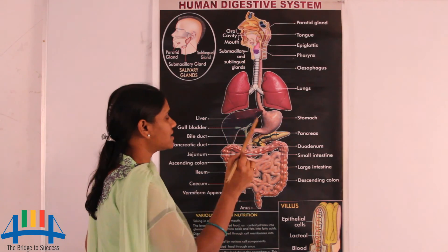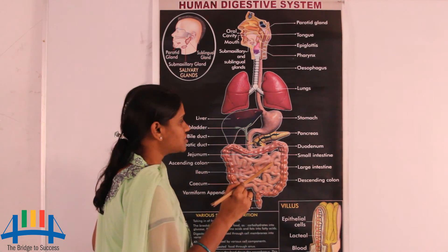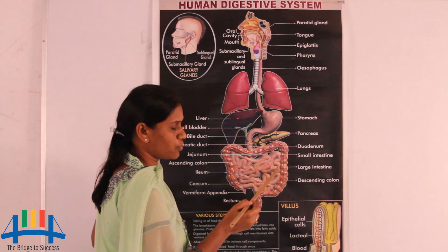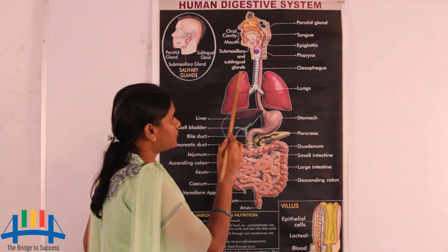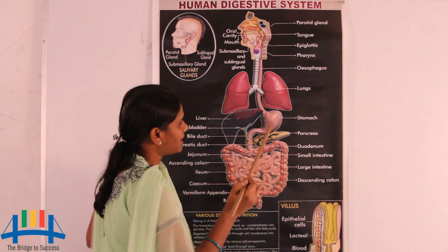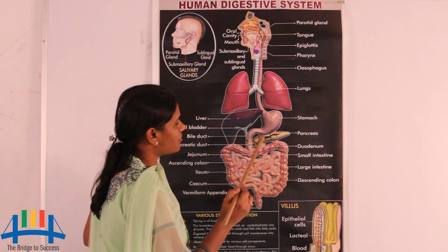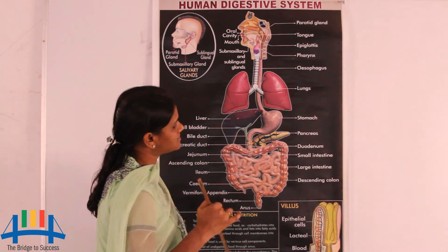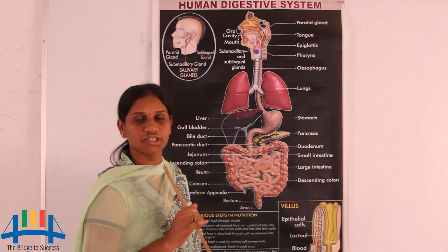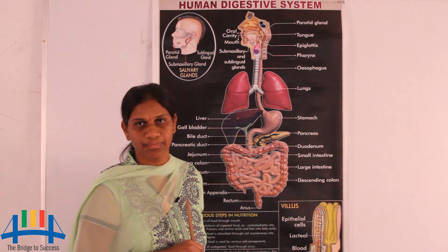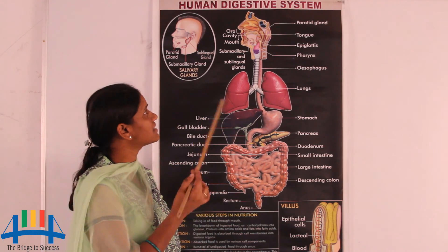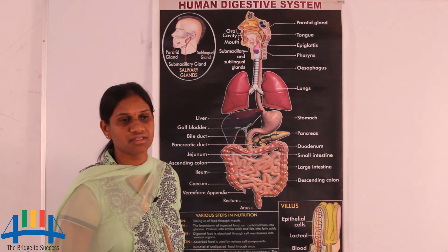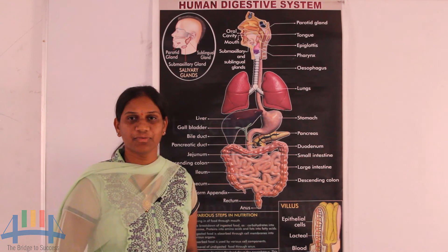The alimentary canal helps in the digestion of carbohydrates, fats, and proteins. Different parts release different hormones and enzymes to aid the digestion process. Friends, now we have a good idea about the digestive system. Thank you.